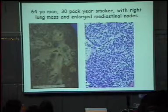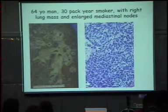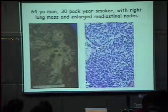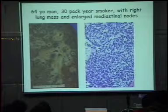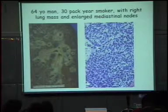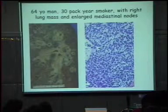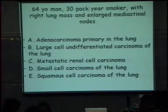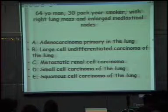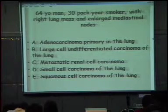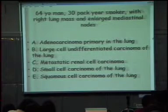A 64-year-old man, 30 pack-year smoker — that right there tells you it's most likely a smoking-related tumor — with a right lung mass and enlarged mediastinal nodes. The histology choices are: A — adenocarcinoma primary in the lung; B — large cell undifferentiated carcinoma; C — metastatic renal cell carcinoma; D — small cell carcinoma of the lung; or E — squamous cell carcinoma of the lung. You really need to know the histology, though you can knock out one from the history.